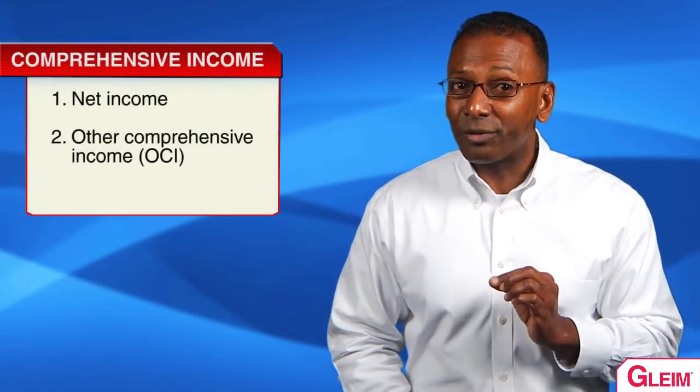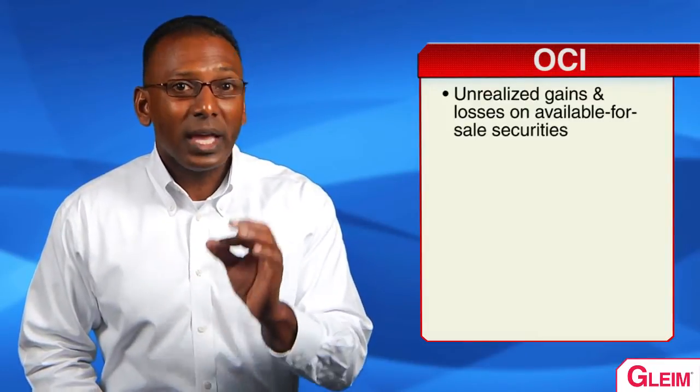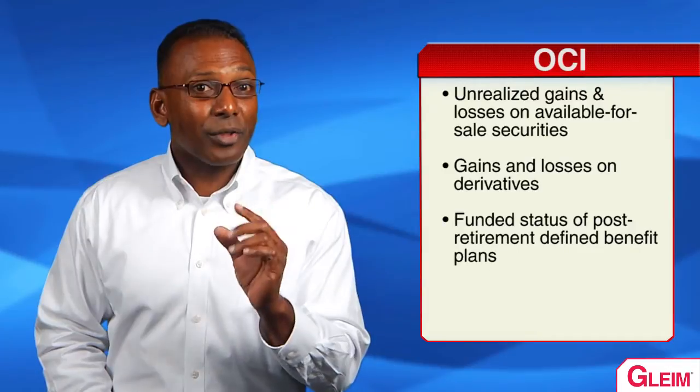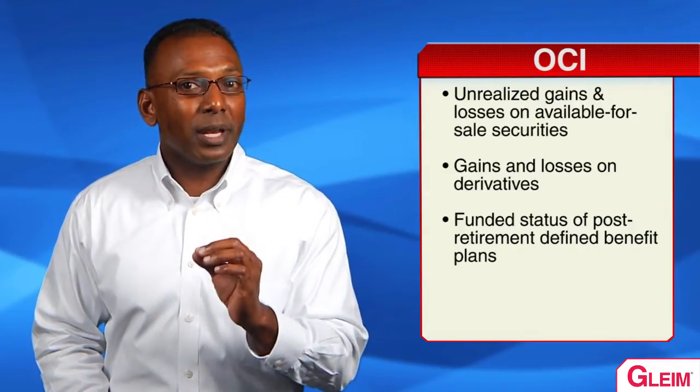Comprehensive income includes all components of net income and other comprehensive income, known as OCI. Net income includes revenues, expenses, gains, losses, and could also include discontinued operations and extraordinary items. Then we add one more layer — OCI. OCI includes unrealized gains and losses on available-for-sale securities, gains and losses on derivatives designated as cash flow hedges, certain amounts associated with post-retirement defined benefit plans, and certain foreign currency items.